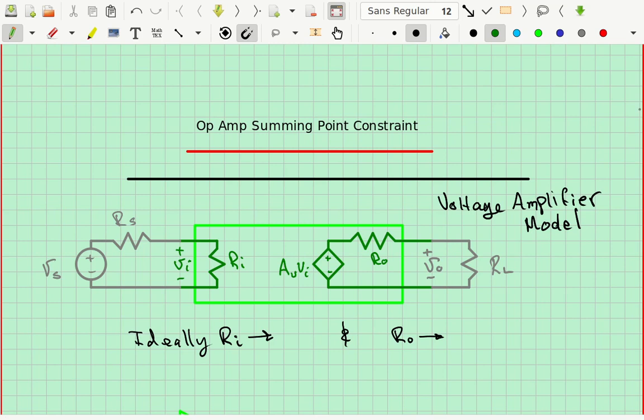And since we can't control RS, the best way to do that is to make RI infinite. If we make RI infinite there's no current through RS and then VS and VI are the same. So we're going to say here that the best thing to do is to make RI infinity.